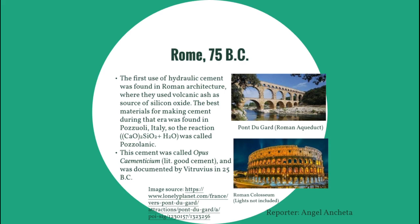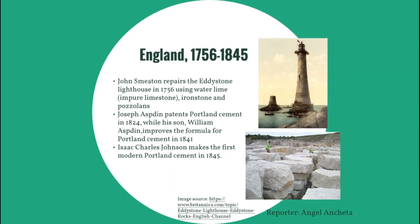This cement was called opus cementitium, or literally 'good cement,' and was documented by Vitruvius in 25 BC. The next improvement is found in England, where John Smeaton repaired the Eddystone Lighthouse in 1756 using water, lime, ironstone, and pozzolans — the first documented use of ironstone in cement making. Joseph Aspidin patented Portland cement in 1824, while his son William Aspidin improved the formula in 1841. It was called Portland cement because they claimed that once hardened it would be as good as quarried stones in Portland. However, Portland cement was not perfected until 1845 by Isaac Charles Johnson.